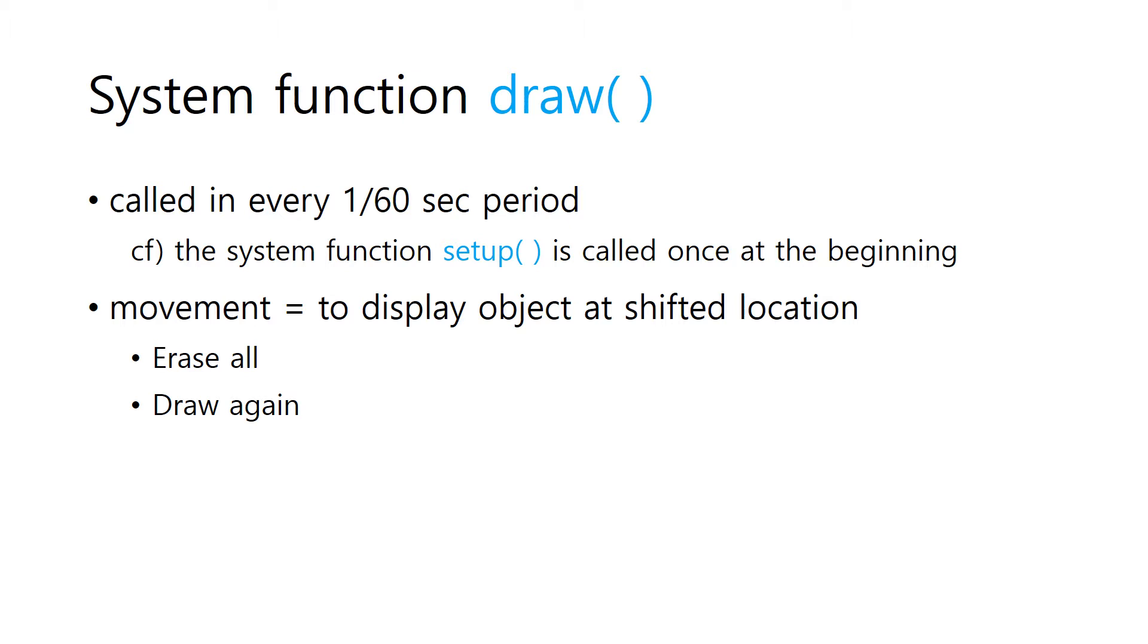First, draw is a function provided by the system Processing 3.0. This function is executed 60 times per second. You can change how many times it is executed. The system function setup is executed only once the first time the program is executed.